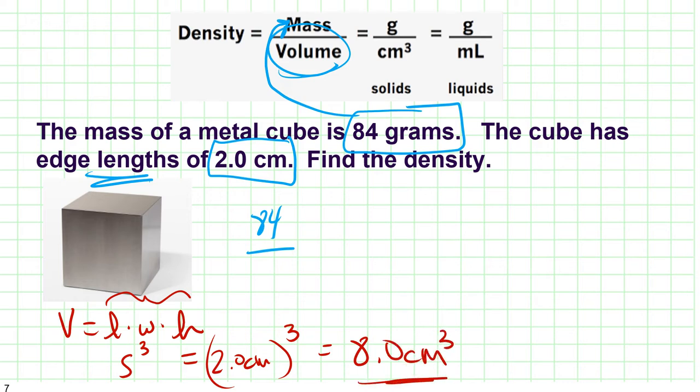So 84 divided by 8.0, 84 grams divided by 8.0 cubic centimeters. And that's going to give us 10.5 grams per cubic centimeters.